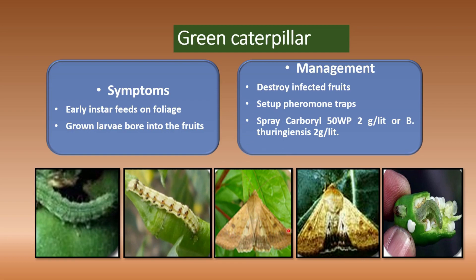Identification of green caterpillar: in the egg stage they are creamy white in color — destroy them at this stage. Larvae are greenish to brown in color. In the pupa stage they are brown, occurring in soil, leaf litter, and crop debris. Adult female is brownish yellow — a stout moth — and the male is light greenish with V-shaped markings.